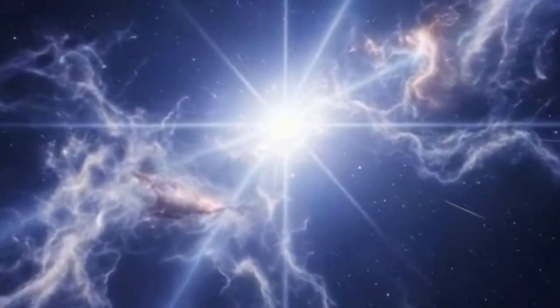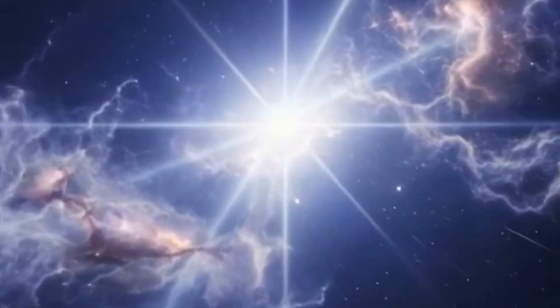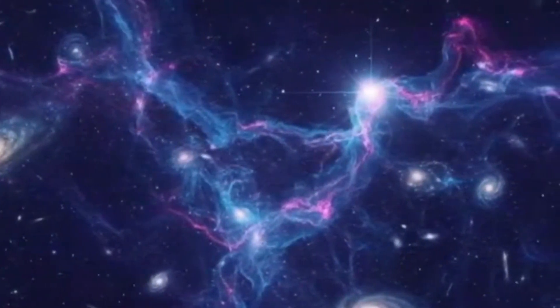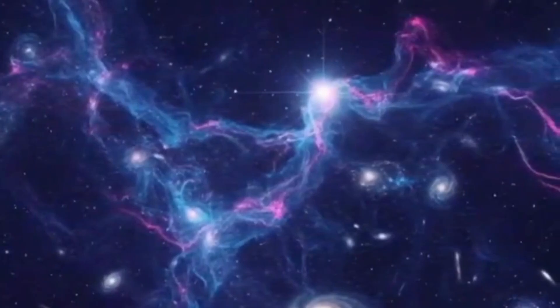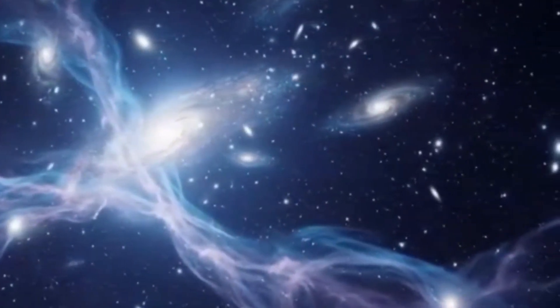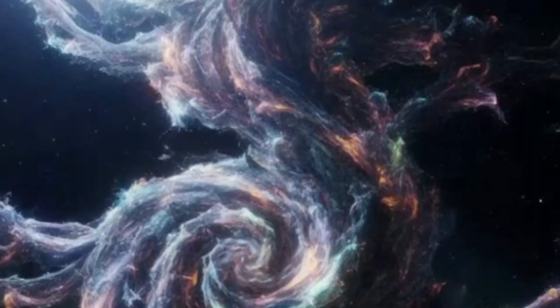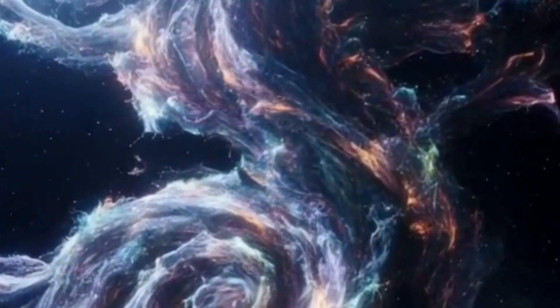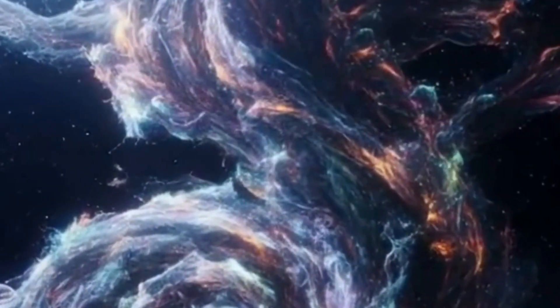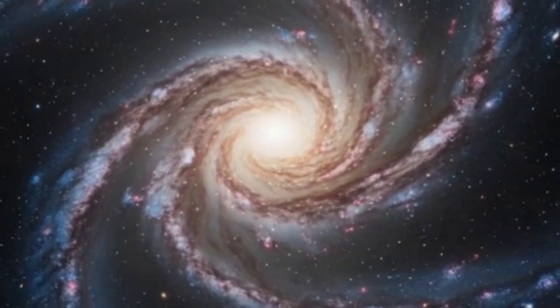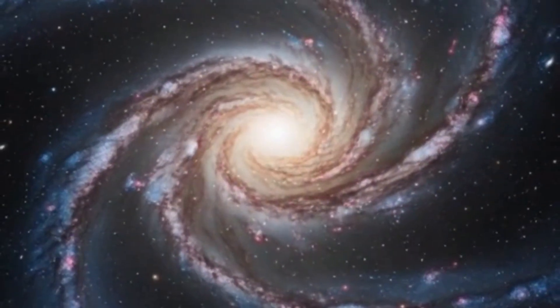If this theory is correct, then the universe doesn't have a single universal age. Instead, each region of space has its own tempo, its own rhythm of time. And that means our familiar picture of a 13.8 billion year old universe might only be part of the story. The true cosmic timeline could be far more complex. A symphony of times, each playing its own note in the grand orchestra of the cosmos.